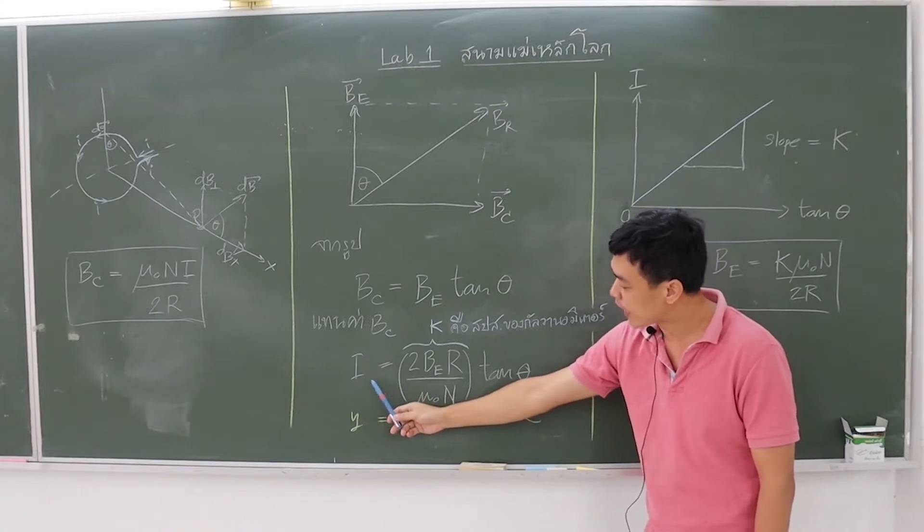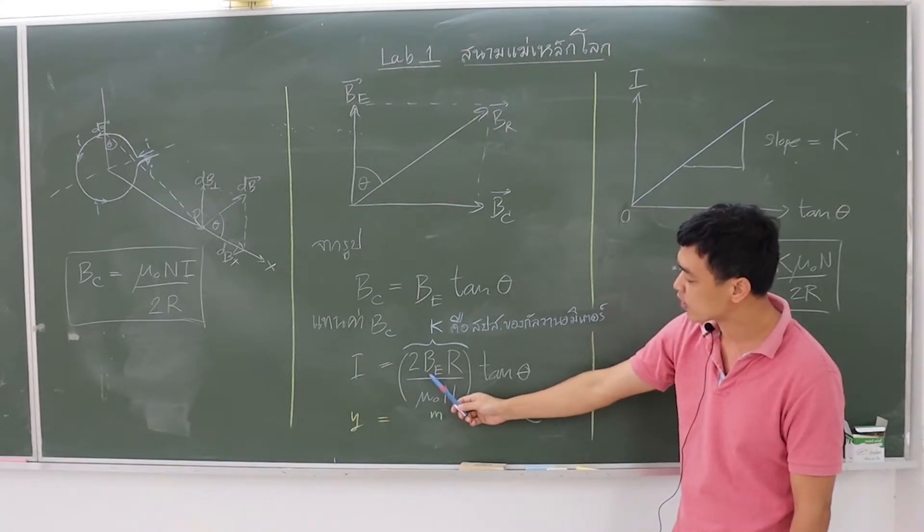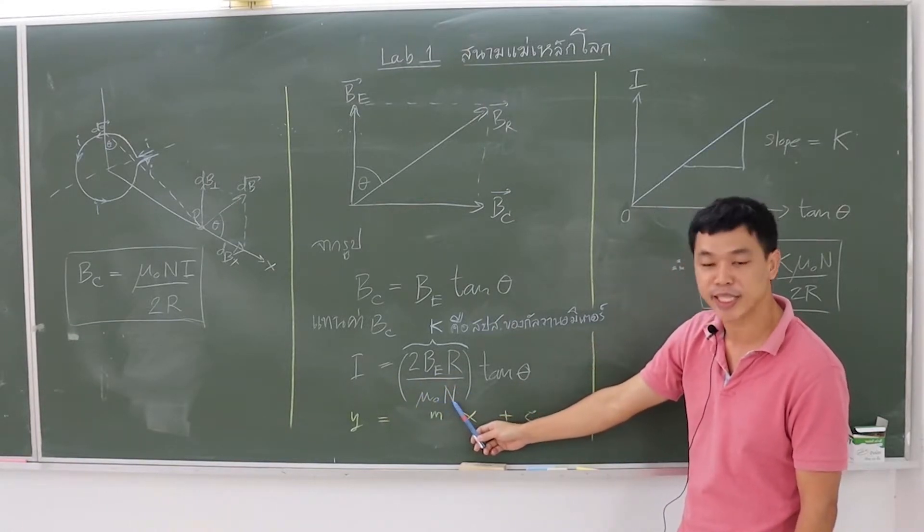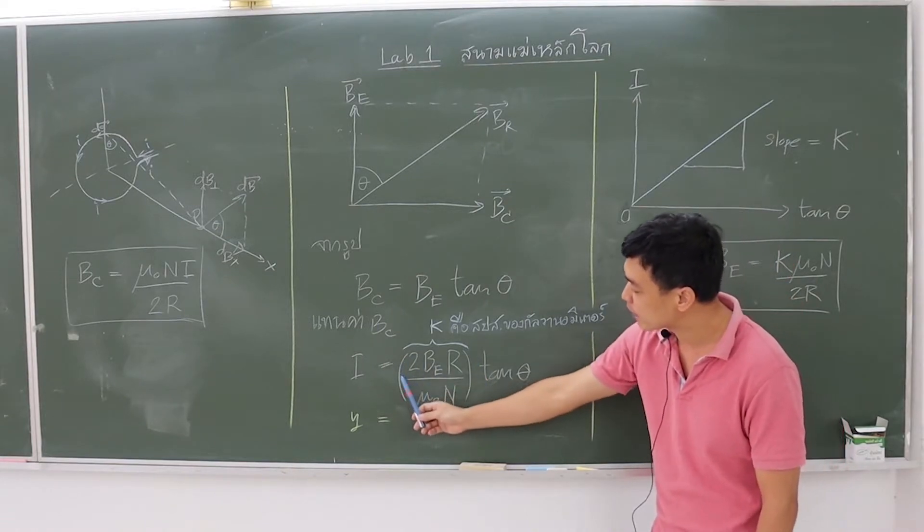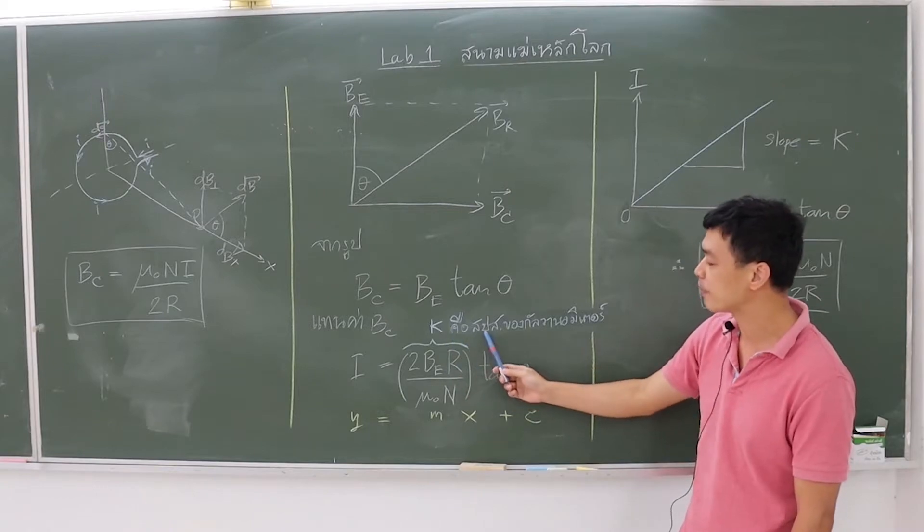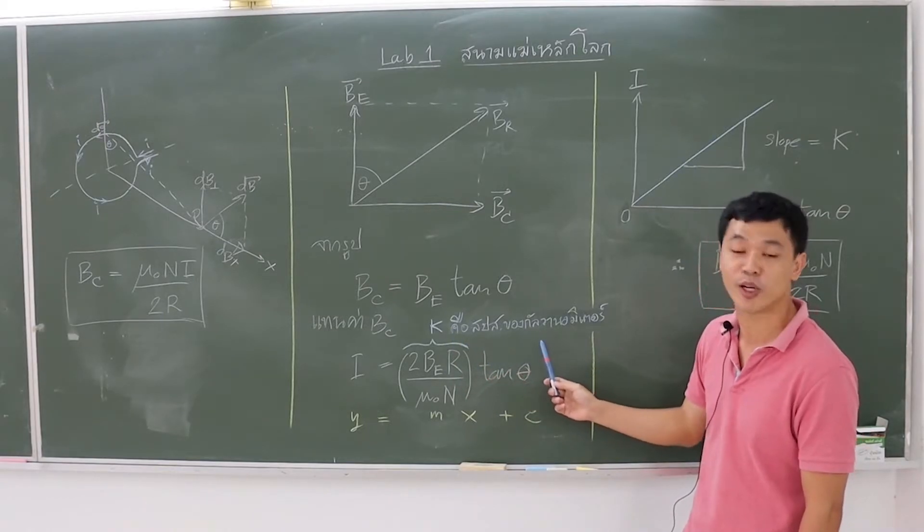From the equation of current, we comparison with the linear equation Y equals MX plus C. When plot the graph between I and tan theta, we can find the slope K, or the K value is the galvanometer coefficient.